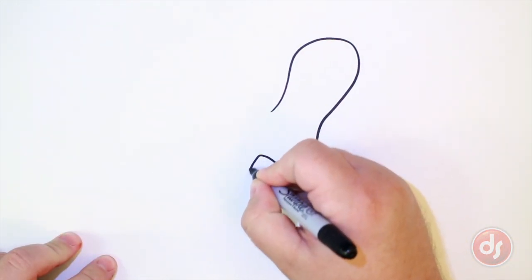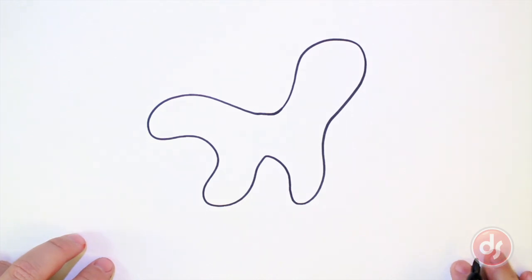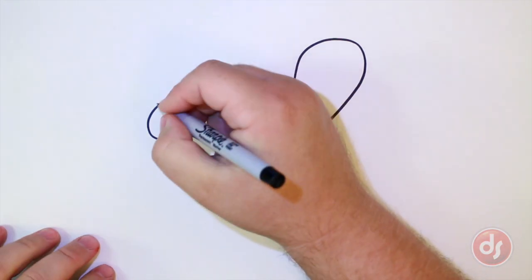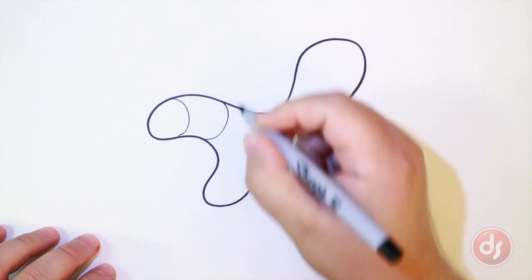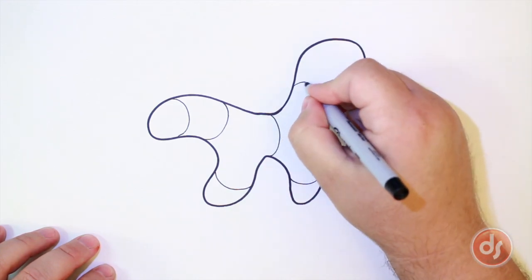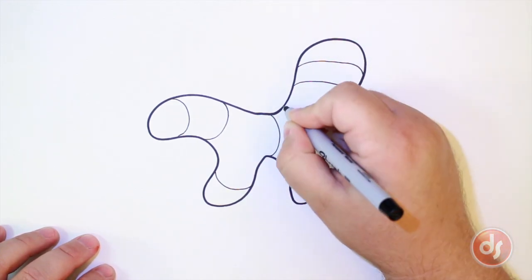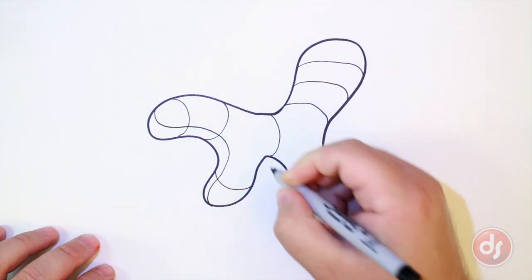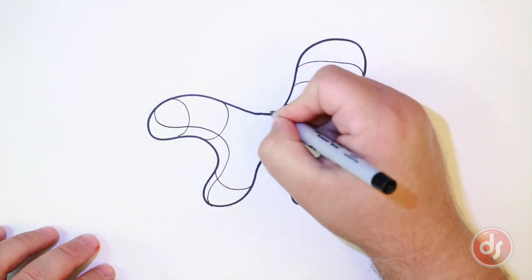For this last one, we'll make it look like a balloon animal. Wrap the X, Y, Z cross contours around the forms to create the volume, thinking about how the lines would move over and around the forms. For the tail section, we can straighten the cross contours out a little to make it seem like it is flatter than the other sections.